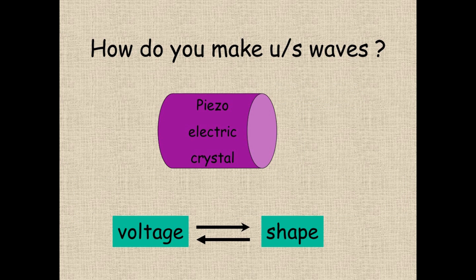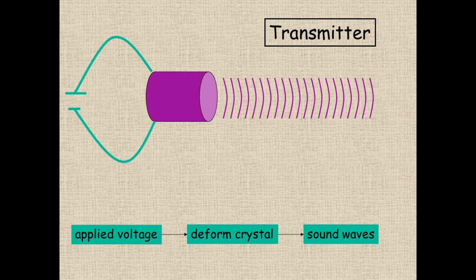How do you make ultrasound waves? The principle is that of a piezoelectric crystal, which has the property that if you apply a voltage to the crystal it will change its shape. Similarly, if you change the shape of the crystal using pressure, a voltage will develop across the crystal. So voltage and shape are interchangeable and reversible.